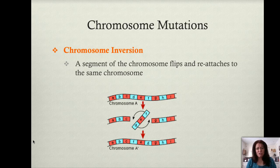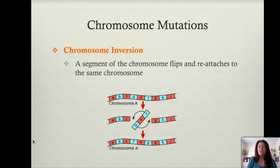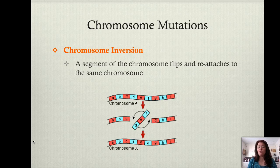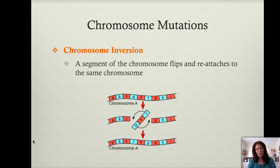Now you might ask yourself why would that matter? The reason is, depending on the location of the inversion, there are some segments of DNA that were intended to adjoin one another. Remember, a gene contains not only a coding region for protein but also regulatory regions. And if those get out of order, then the transcription and translation of that gene will be affected.